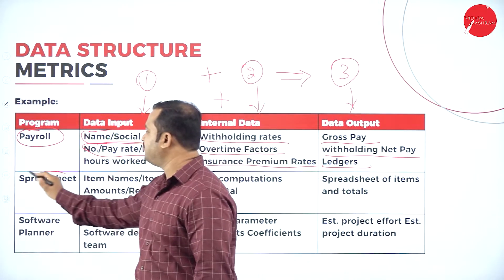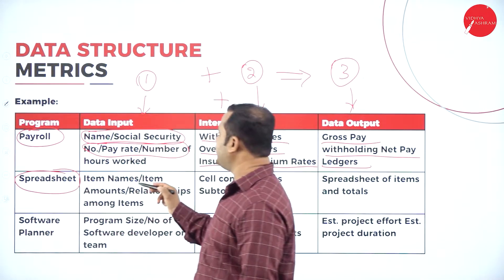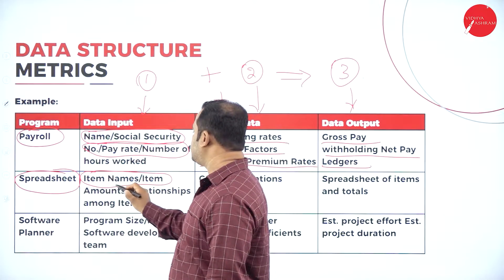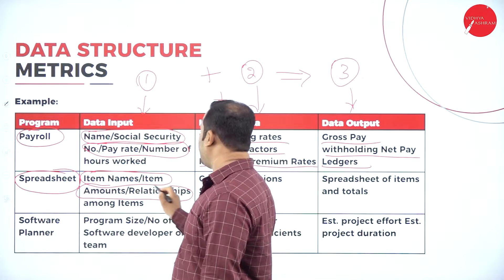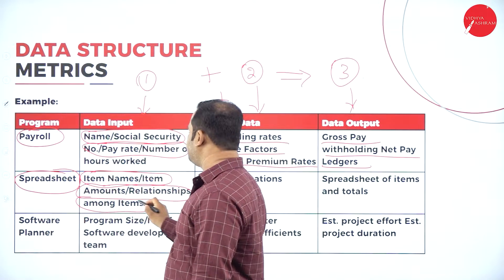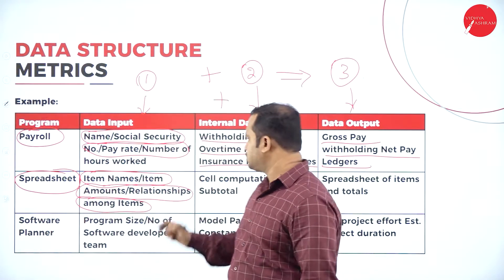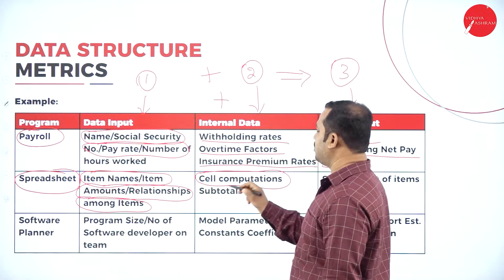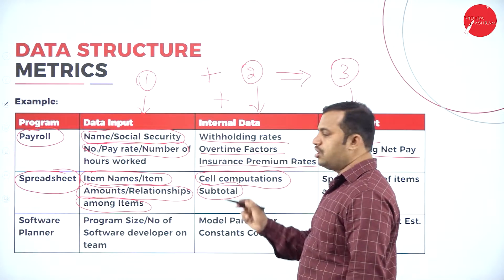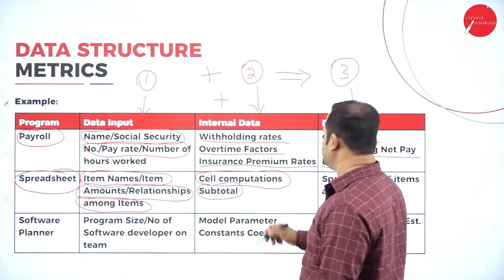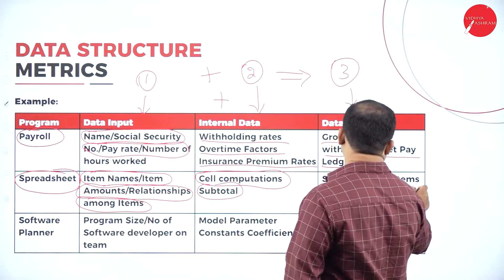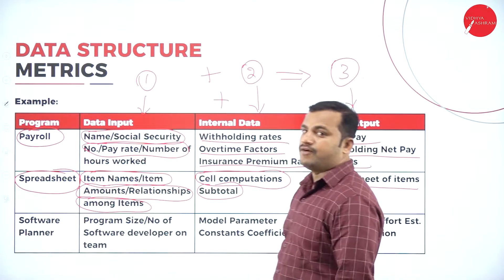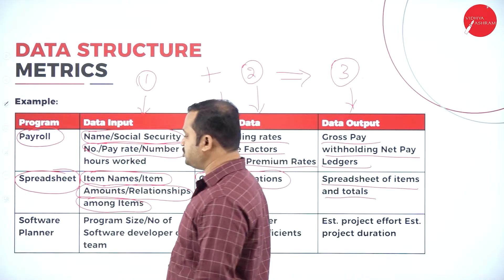Similarly, we have the spreadsheet. For this spreadsheet, we have the data input: item names, item amounts, and the relationship among items. All these are some of the inputs considered here. What is the value considered internally? Cell computations and subtotals are some of the internal data considered here. The output produced is the spreadsheet of items and totals.